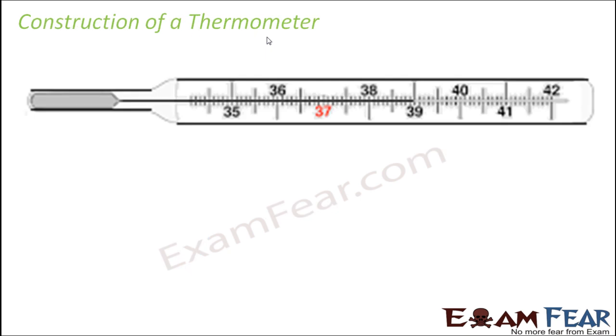So let us look at the construction of a clinical thermometer. What is it made up of? If you look at the thermometer, it is nothing but a long narrow glass tube. This tube is made up of glass. On one side, you have this kind of a structure which is called bulb. So this is bulb and this is the long narrow glass tube.